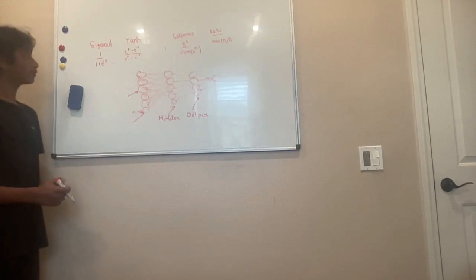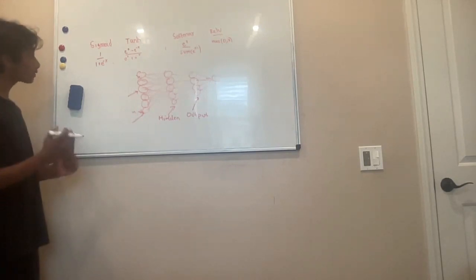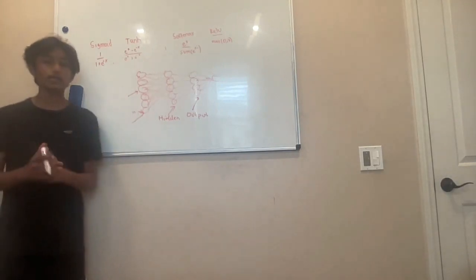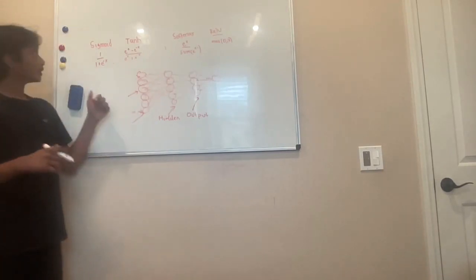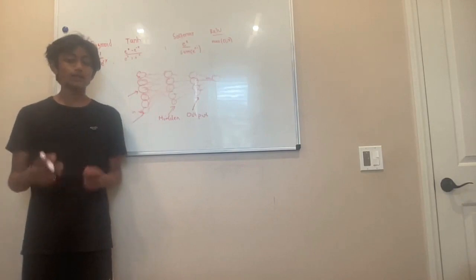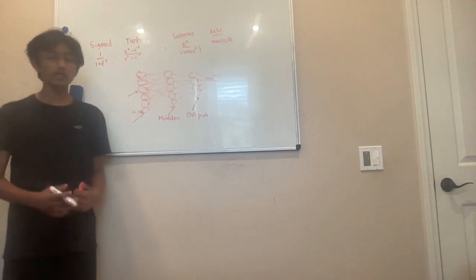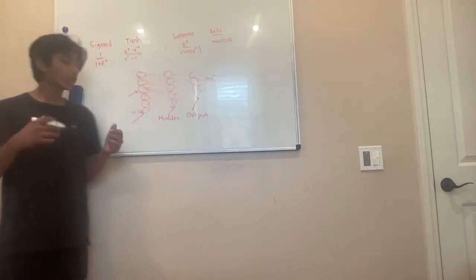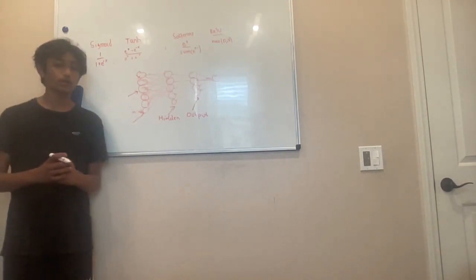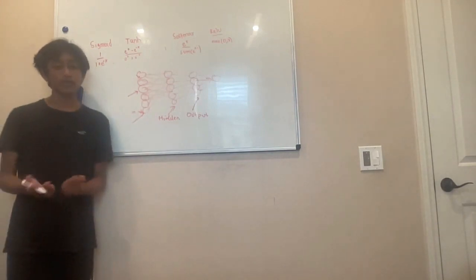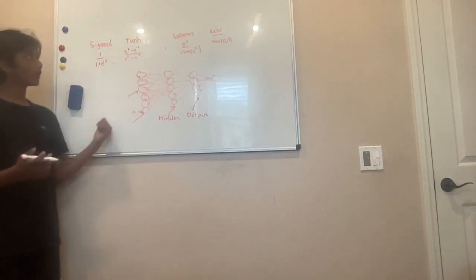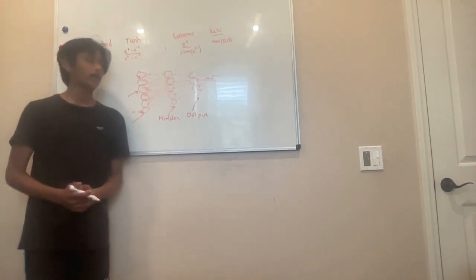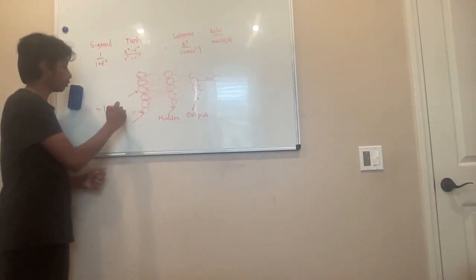Now let's talk about the tanh activation function. Tanh is similar to sigmoid — its formula is e to the power of x minus e to the power of negative x, divided by e to the power of x plus e to the power of negative x. Tanh is also used for binary classification, except we use it in what we call our hidden layers — the layers in between our input and output layer. The reason is that its rate of change is much greater, actually four times greater than our sigmoid activation function. Also, tanh outputs from negative one to one.